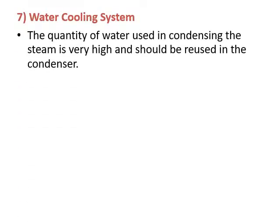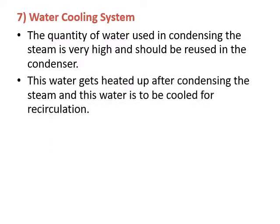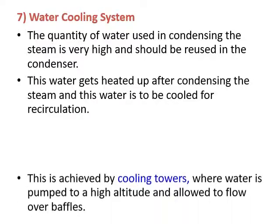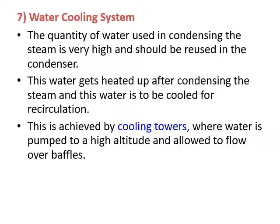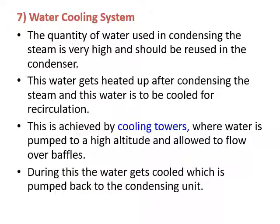The water cooling system: the quantity of water used in the condensing system is very high and must be reused. This water gets heated after condensing the steam and is then cooled for recirculation in the cooling tower. When you go near a major power station like UPCL on the highway, you can see steam coming out of parabolic towers — those are the heat rejection towers. Water is pumped up and allowed to flow over baffles, where it gets cooled and is pumped back to the condensing unit.